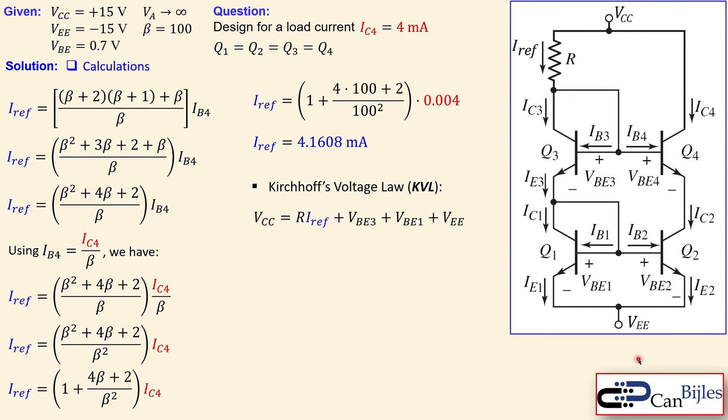Kirchhoff's voltage law gives us the following. We can say VCC all the way to the final point from top to bottom: VCC equals Iref times R plus the voltage across the base-to-emitter junction plus this junction base-to-emitter for Q1, and then the voltage at the VEE node. We need an expression for R. We rewrite this: 15 minus (-15) minus 0.7 minus 0.7, divided by the reference current, gives 6,874 ohms.